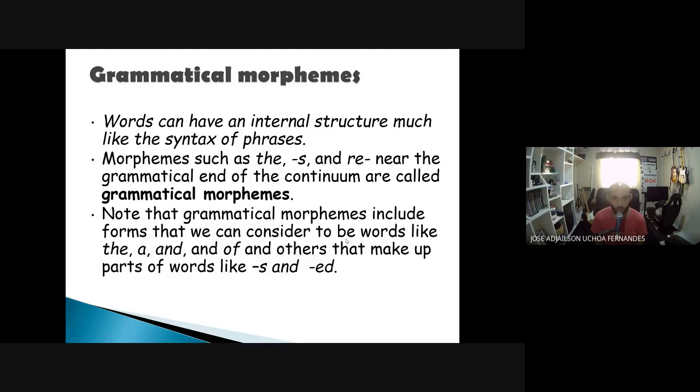Now note that the grammatical morphemes include forms that we can consider to be words like 'the', 'a', and 'and', 'of', which are conjunctions, prepositions, and others that make up parts of words like the final 's' and the final 'ed'. For example, in the words pencils, we have the base pencil and we have its plural form pencils, which semantically are not that apart. They just gain this final 's' so that we have the idea of plural. In walked and walk, we have the same notion. We just have the idea of past tense or of past participle depending on the context, but it's still the verb to walk.